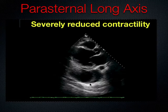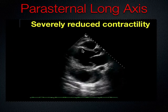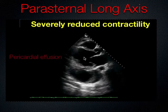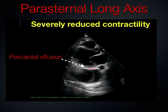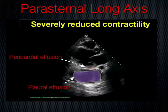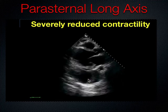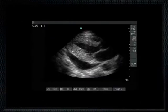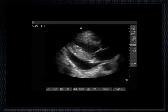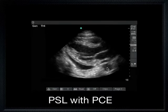Here's an abnormal parasternal long axis. There is severely reduced contractility — the mitral valve is not smacking the septum and the interventricular septum and posterior wall are not squeezing together. There's also a pericardial effusion lying anterior to the descending aorta, and a pleural effusion lying posterior to the descending aorta. This is an important distinction: fluid anterior to the descending aorta is pericardial; posterior to it is pleural. This image shows both. This is decreased LV function with a pericardial effusion.